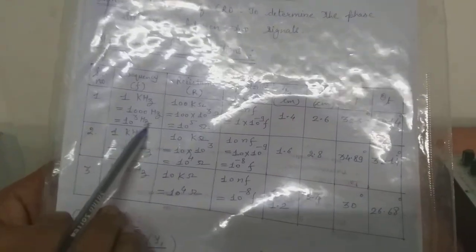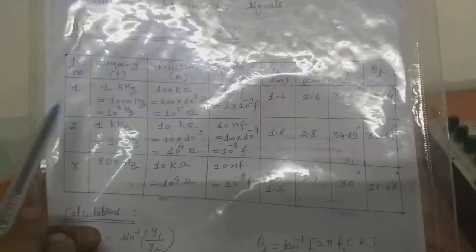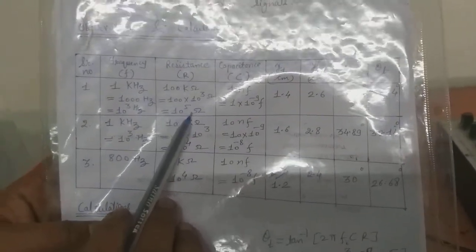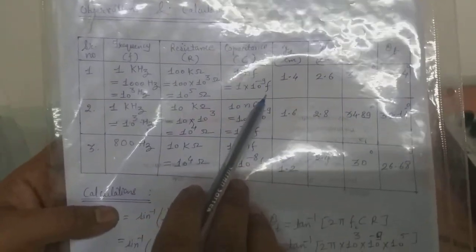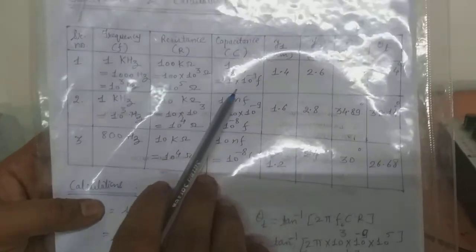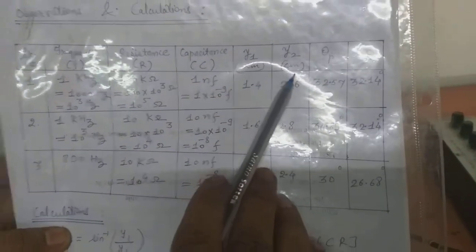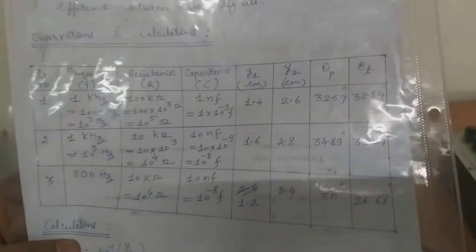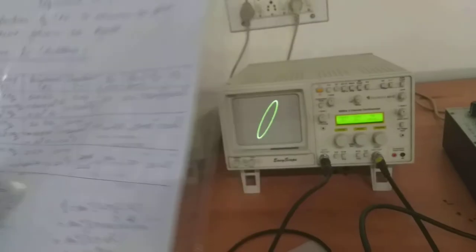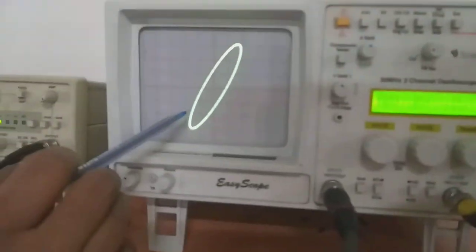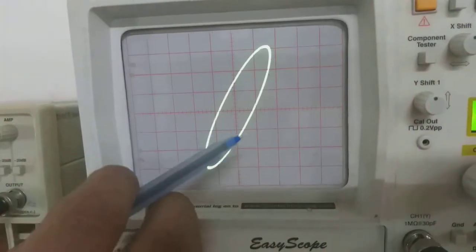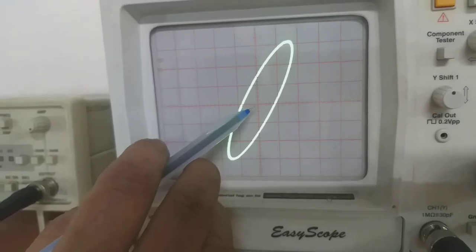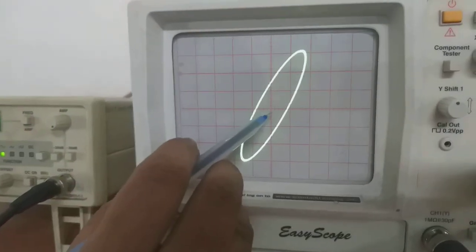Frequency is kept at 1 kilohertz, which you write as 10³ Hz. Resistance is 10⁵ ohms and capacitance is 10⁻⁹ farads (nanofarads). On the screen you can observe an ellipse — this is the Lissajous pattern. We position this ellipse exactly at the center of the screen so that the center acts as the zero or origin.